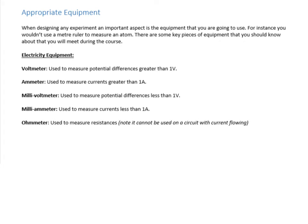Next is about selecting appropriate equipment. Throughout year 12 and year 13 you'll come across a large array of equipment, and you should be able to select the most appropriate piece for your investigation. With circuitry, there are essentially five key pieces of equipment to know about. You've got two types of voltmeter: a standard voltmeter and a millivoltmeter. You need to think about what scale of potential differences you'll be measuring — if they're greater than one volt, use a standard voltmeter; if smaller than one volt, switch to a millivoltmeter for greater precision in your readings.